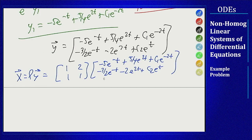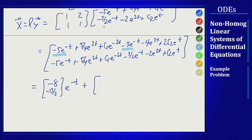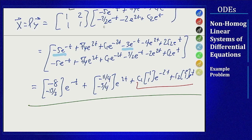Multiplying P times the y vector and collecting like terms: for e^(-t) terms, -5 + (-3) = -8 on top and -(3/2) - 5 = -13/2 on the bottom. For e^(2t) terms, (5/4) - 4 = -11/4 on top and (5/4) - 2 = -3/4 on the bottom. The homogeneous part gives c₁[1,1]e^(-2t) + c₂[2,1]e^t, matching our original homogeneous solution. That's our diagonalization answer.